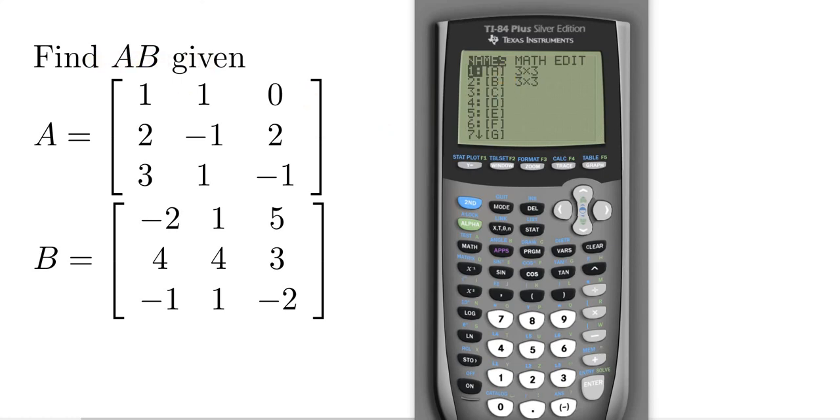The question is define A times B. So you just go to A and hit enter. Whoops. It was the wrong command. Go back to matrix. Once you go down to names, go to A and hit enter. Then go back to A. And hit enter. To B, rather, and hit enter. And hit the button, and it gives you the answer A times B.